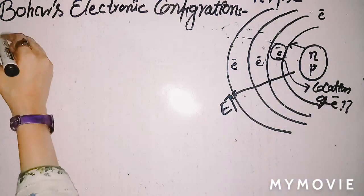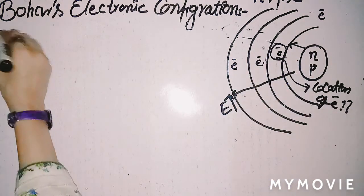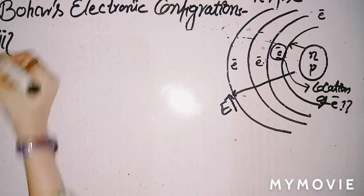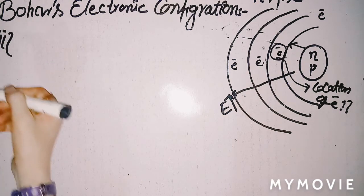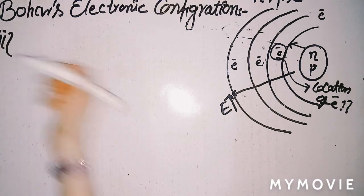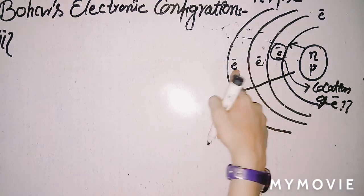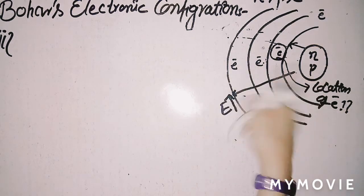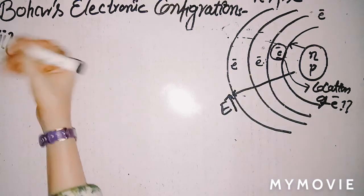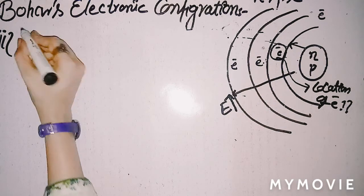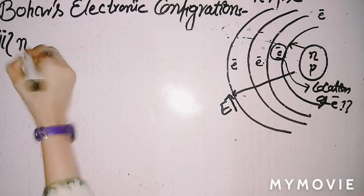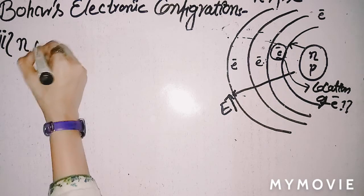In order to resolve the problem of locating electrons, Bohr provides the second postulate. Bohr said that n is a number — an n-value — that is assigned to a given shell.